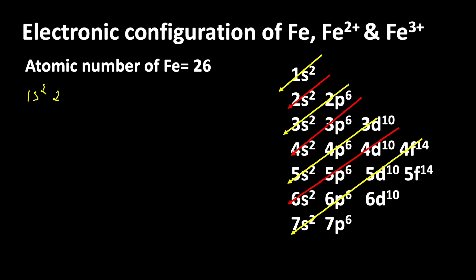1s2 2s2 2p6 then 3s2 3p6, after that electrons enter into 4s2 after that 3d6. If you count all these electrons we will get 26 electrons.